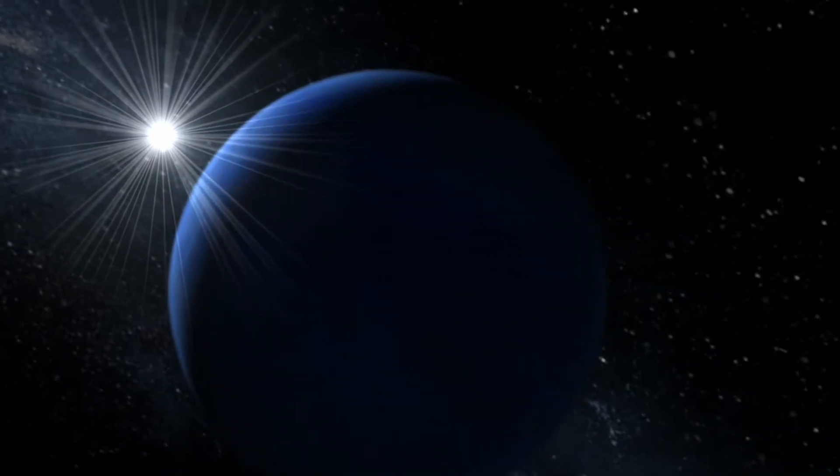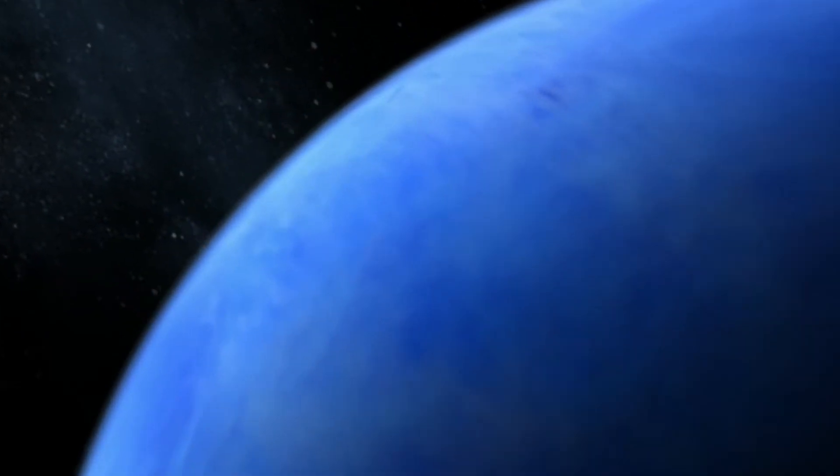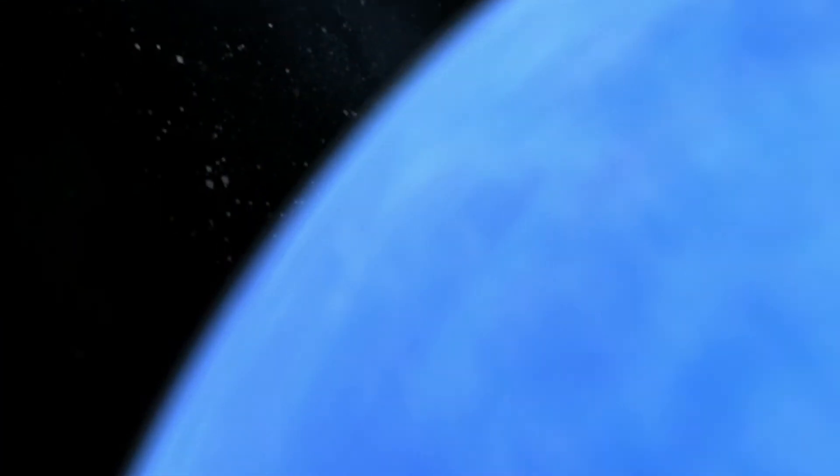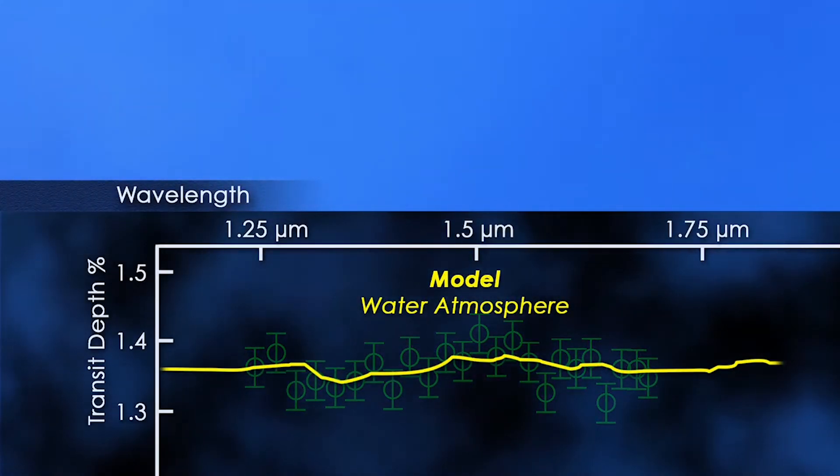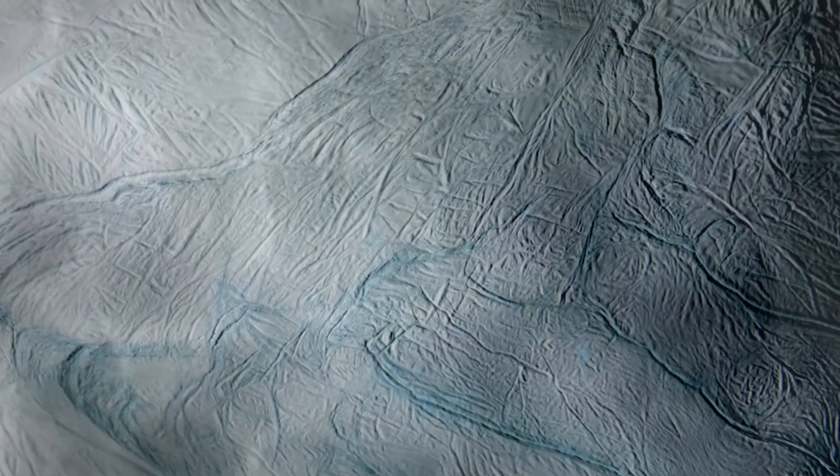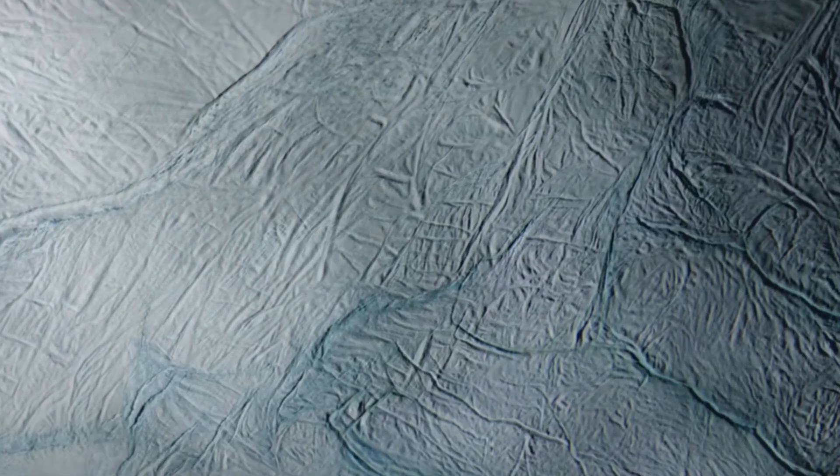By contrast, planet GJ 1214b is a comparatively inviting water world. Its nearly flat transit depth curve hints at a shallow atmosphere of pure steam enveloping an ocean thousands of kilometers deep, with an interior of hot ice, water solidified by extreme pressure rather than cold.